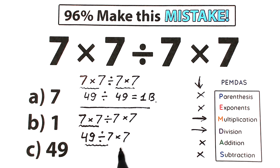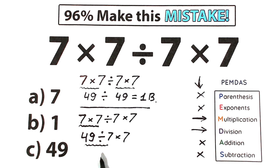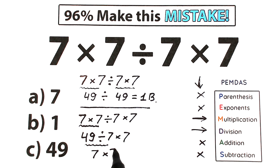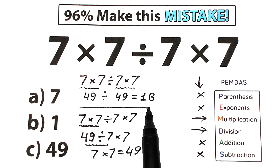This is a really important moment, because this leads to a completely different solution. Now we scan again from left to right, and the first sign is division. So 49 divided by 7 gives us 7, and 7 times 7 — because we still have that multiplication — gives us 49. We get 49, which is option C.